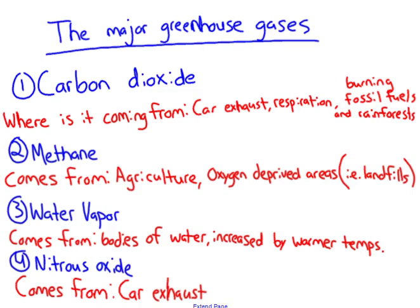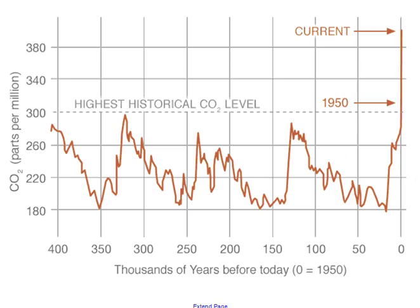We also get methane from agriculture — commonly known as cow farts and human farts. Our digestive systems are oxygen-deprived, so we fart out methane, as do cows, which is a greenhouse gas. Water vapor is another one — it's not produced by humans but comes off bodies of water, and the amount of evaporation increases with warmer temperatures. The final one is nitrous oxide, which comes from car exhaust. This map shows carbon dioxide emissions over the last 400,000 years, and within the last hundred years our CO2 emissions have gone way up because of things like the Industrial Revolution, more cars, and more agriculture.